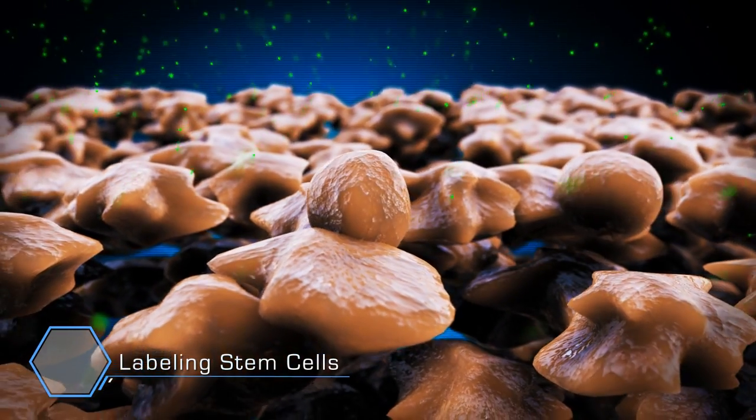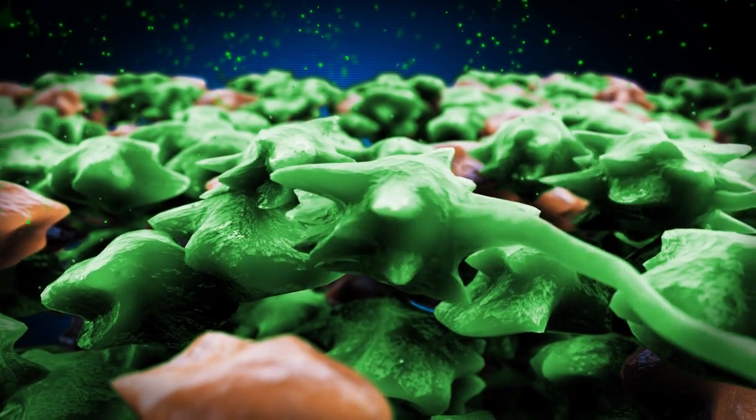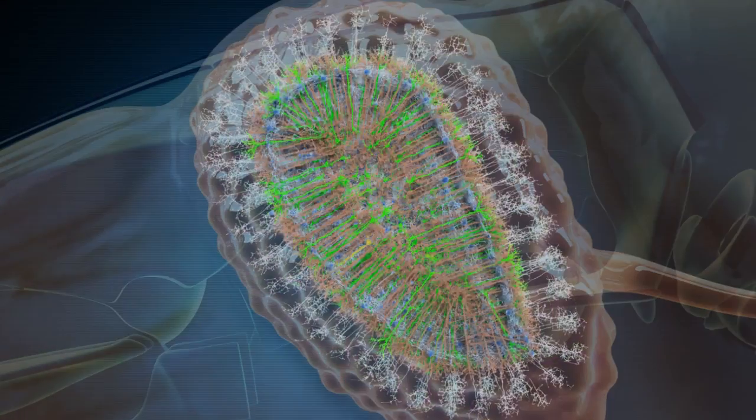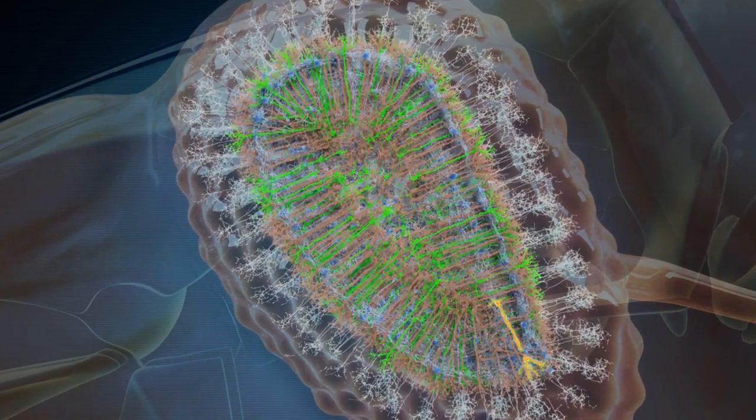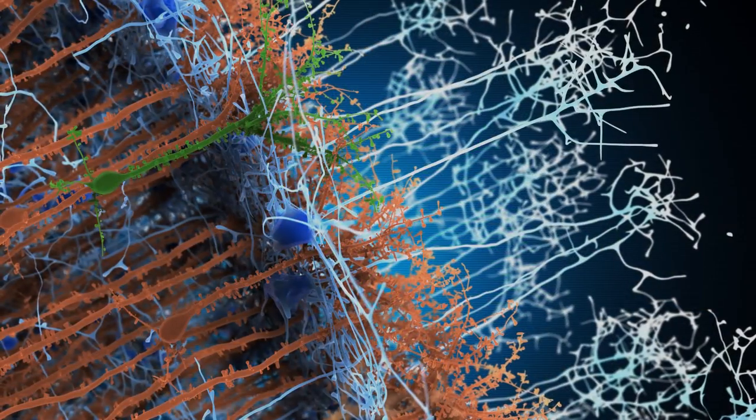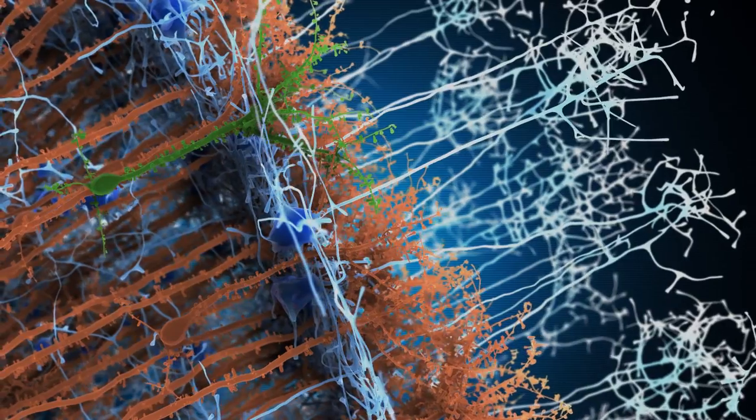We are able to specifically label this population by introducing DNA into the cells to express a fluorescent protein. In addition, we also express in these cells a special protein that causes them to be electrically active when exposed to blue light.